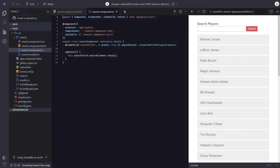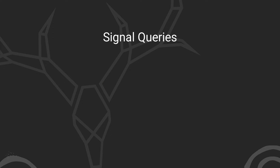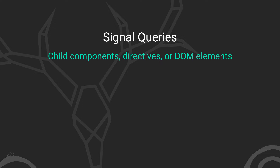If it wasn't static, we'd need to add it in the ngAfterViewInit lifecycle event instead because it wouldn't be available until the view is ready. Now that we understand what's going on, let's switch to the ViewChild function. This function is part of a set of what are known as signal queries in Angular. These queries are used to find child components, directives, or DOM elements.